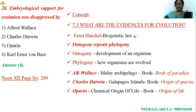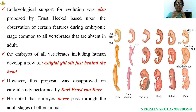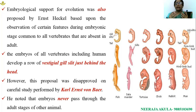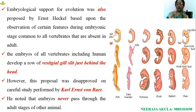Haeckel's biogenetic law states that ontogeny repeats phylogeny — also known as the theory of recapitulation. This concept is not clearly given in the NCERT book. Haeckel stated that higher vertebrates, during their embryonic development, show the adult stages of other animals. He exemplified this with the development of gill slits in the human embryo, where vestigial gill slits are present behind the head.